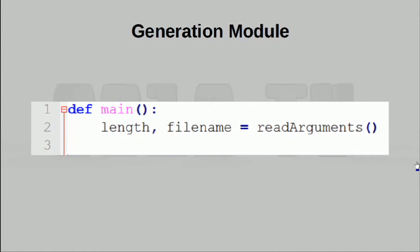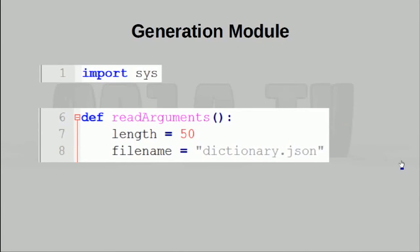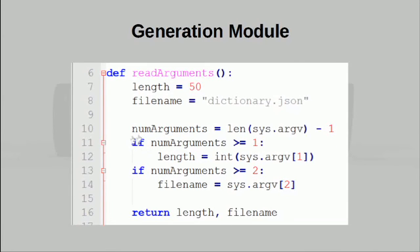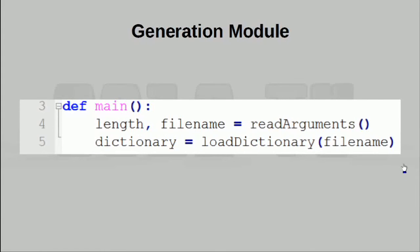We are of course also going to write this from the top down, and that's why we will begin with a readArguments function. This isn't too different from what we've seen in the previous part. We set up some defaults, then we calculate the number of arguments that are available. Depending on the length, we'll take in as many pieces of input as we need. In the end, we simply return those values. The only thing we do differently here is that the first parameter, a number, must be cast to an integer. If we don't do this, the number comes out as a string and we can't use it for calculations later. Going back to our main function, our next order of business is to actually load up the dictionary.